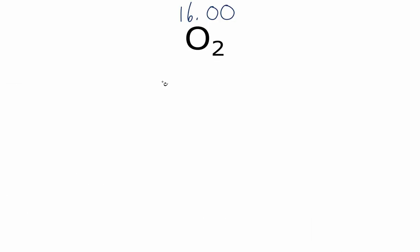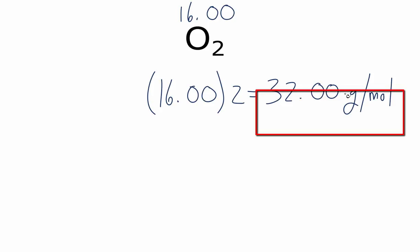To find the molar mass, I take the 16.00 and multiply that by the subscript here, and I get a molar mass of 32.00 grams per mole. You need to make sure you have the unit there, grams per mole.